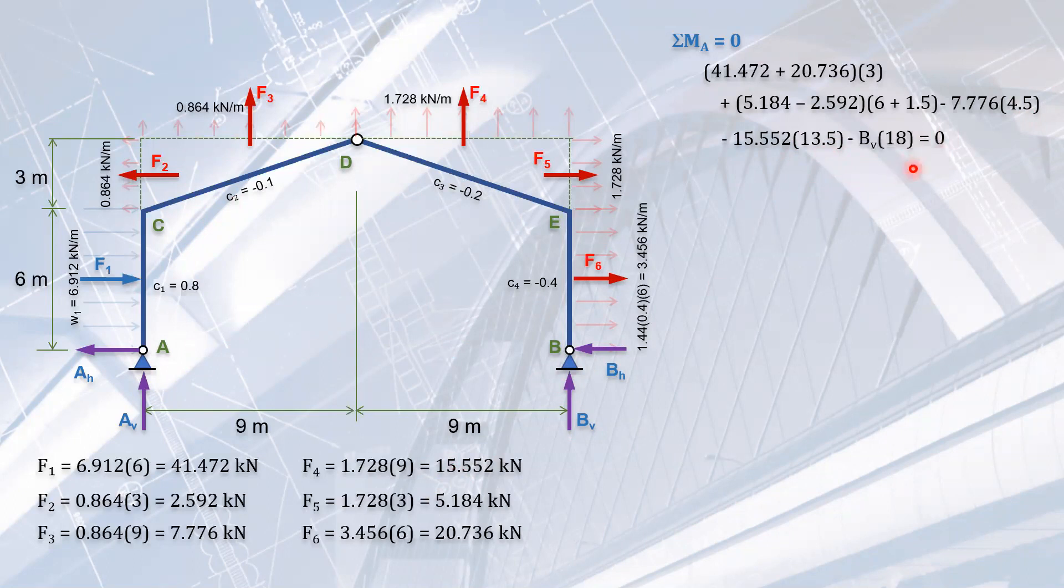We get BV equals negative 2.16 kilonewtons. Notice we got a negative sign, meaning the assumption is reversed. This should be downward, not upward. The actual value is 2.16 downward. Now we can solve for AV.